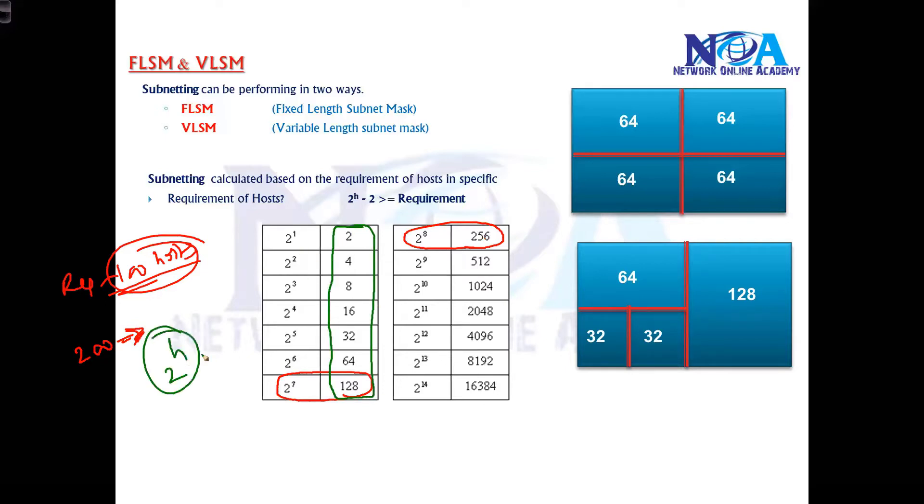When you do subnetting, the exact size requirement is not possible. You have to go with these—these are the only possible sizes you can go with based on 2 to the power of h values. Exact 100 or exact 150 or exact 170 is not possible; these are the only possible sizes we can go with when we divide the network.